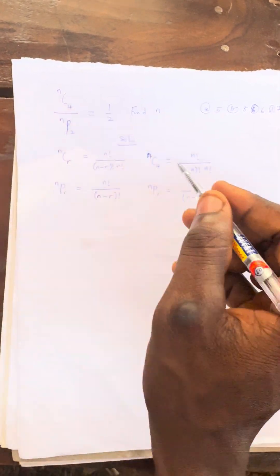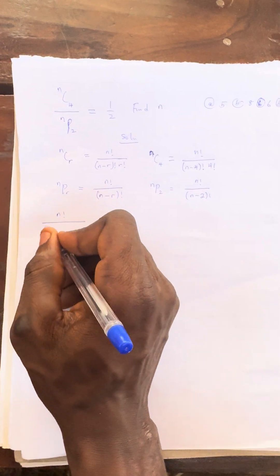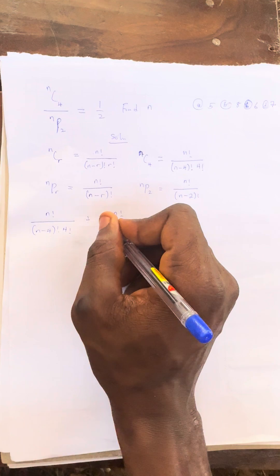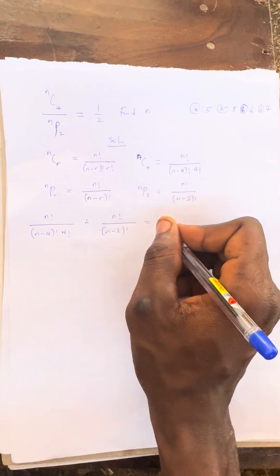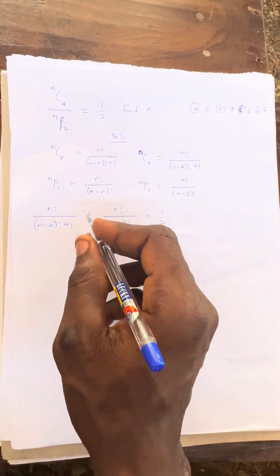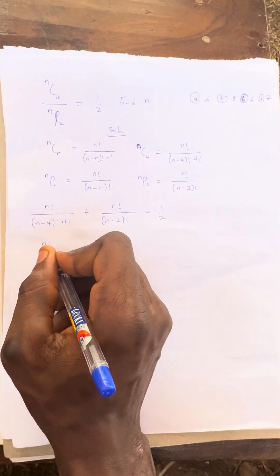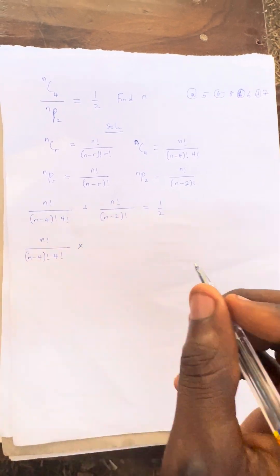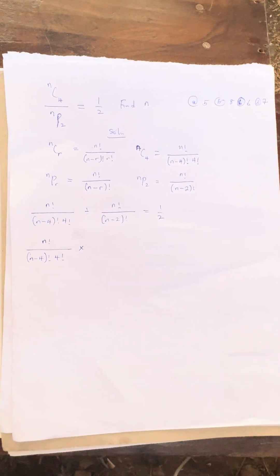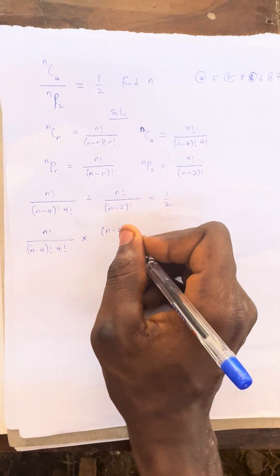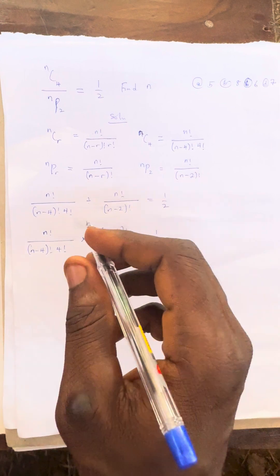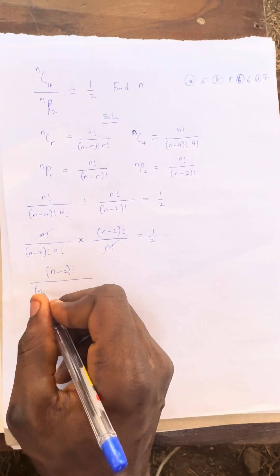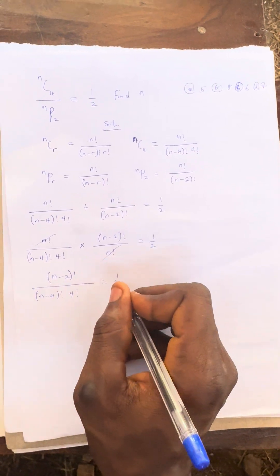Going back to the question: n combination 4, which is n factorial over (n minus 4) factorial times 4 factorial, divided by n permutation 2, which is n factorial over (n minus 2) factorial, all equals 1 over 2. We change the division to multiplication, so it becomes n factorial over (n minus 4) factorial times 4 factorial, multiplied by (n minus 2) factorial over n factorial, equals 1 over 2.